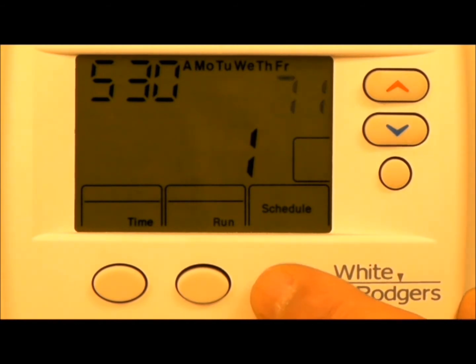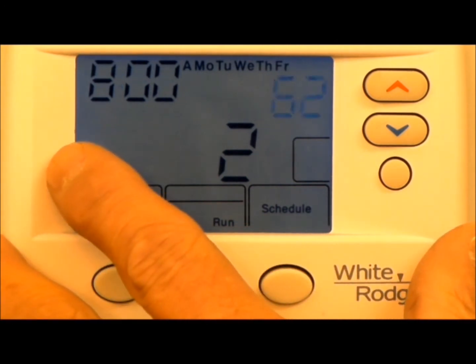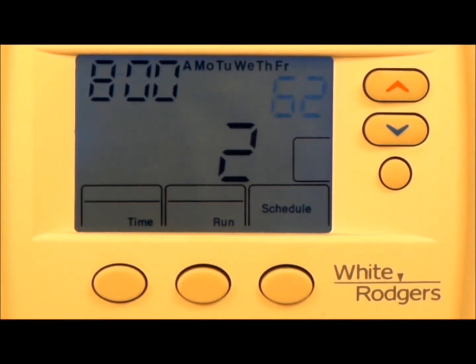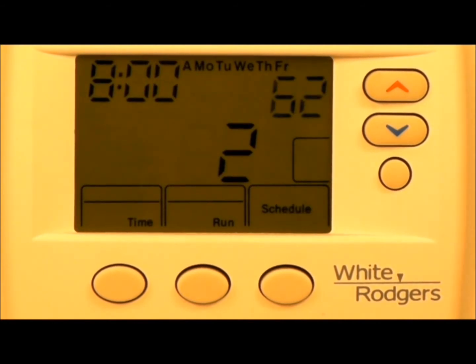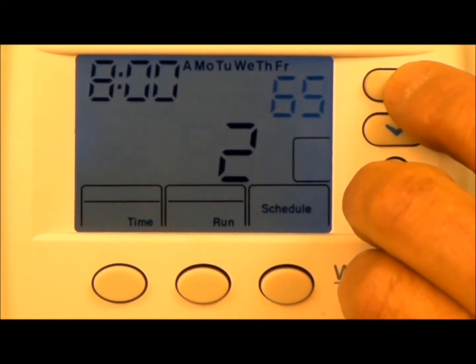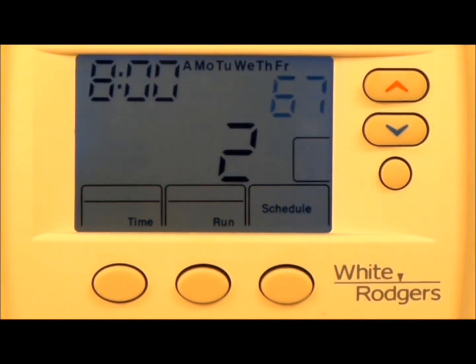To get through the next scheduled time zones I hit the schedule button. Second time zone 8 a.m. or typically when people would be going to work. Here's where we can play with an offset. Now because I'm using 71 as my warm up temperature I would use a 4 degree increment when I am not home. 67. That is the maximum that we recommend you use when it comes to your offset.